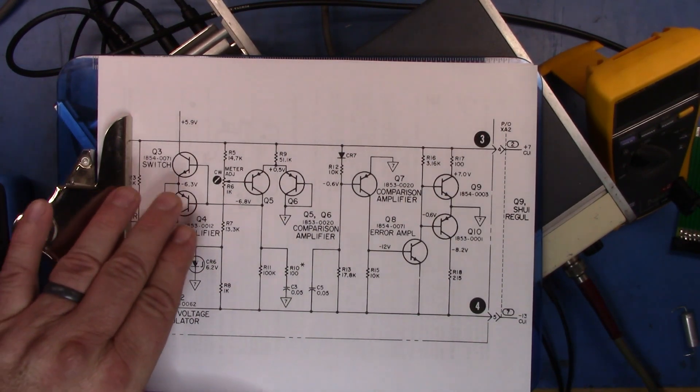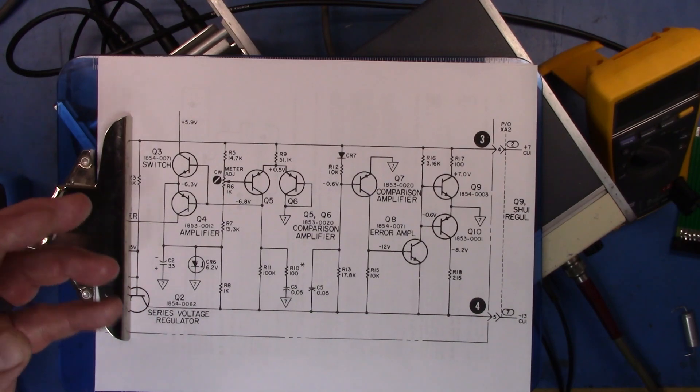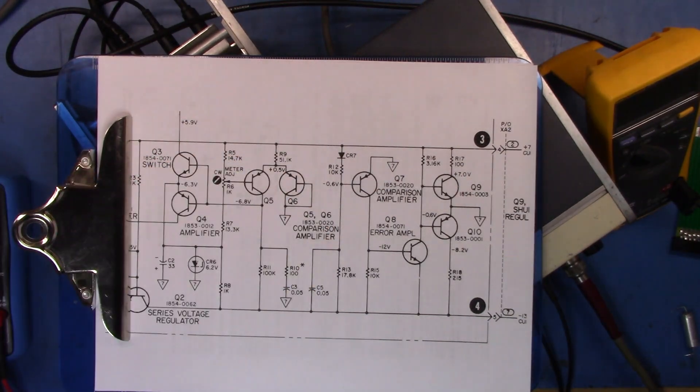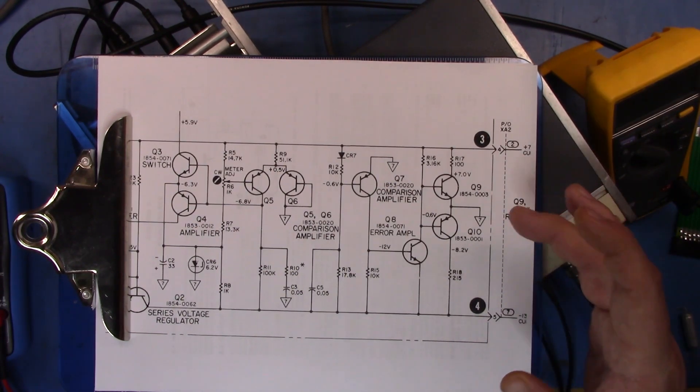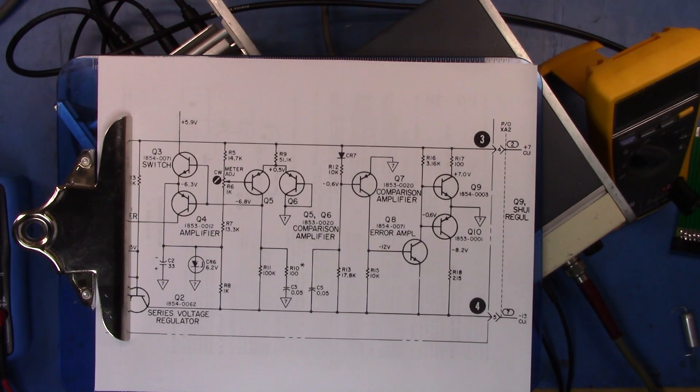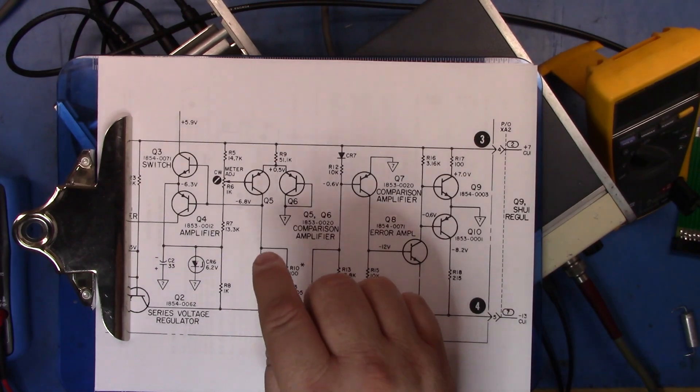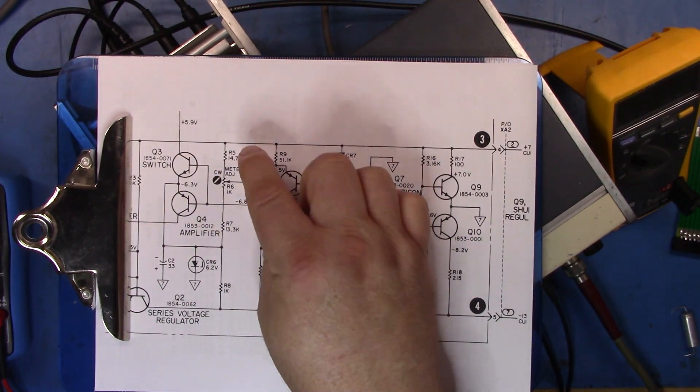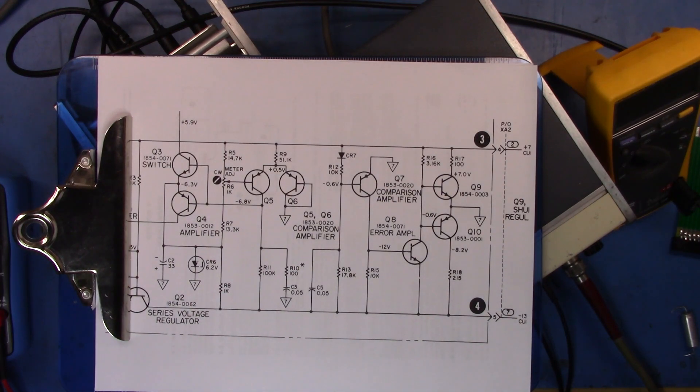And the amplifier Q4 here controls or amplifies the error term and sends it into Q5 to help regulate the 7 volt and 13 volt rails. So to start off I thought I'll just lift the legs of R5 and R7 and measure them.